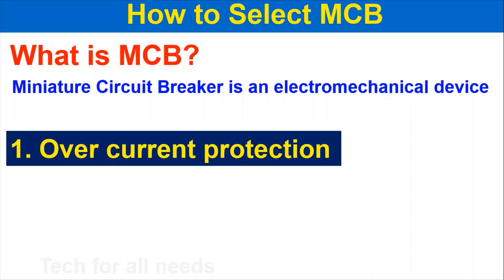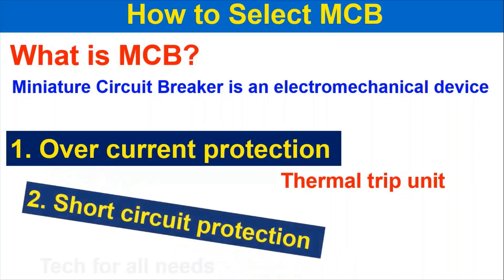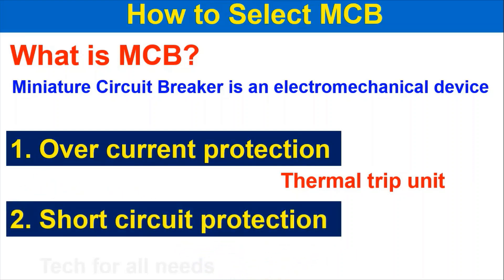Overcurrent protection is handled by a thermal trip unit. The second protection is short circuit protection, handled by a magnetic trip unit.